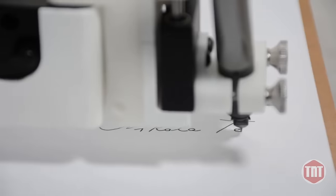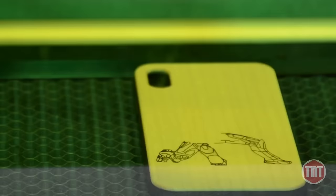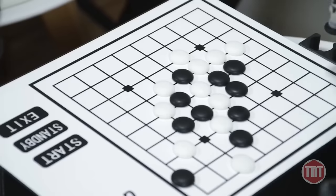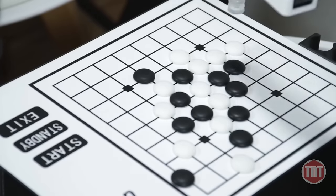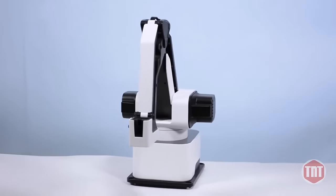Imagine having Iron Man's Jarvis on your desktop that writes your letters, draws your pictures, laser engraves your phone case, and plays chess with you. Today it all becomes possible with Hexbot.